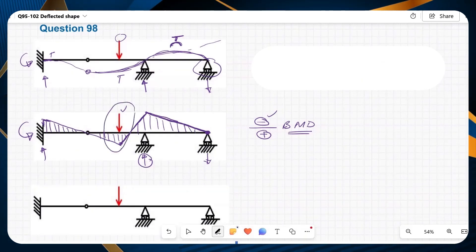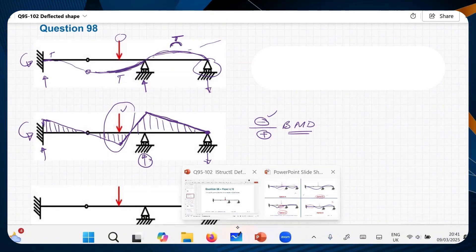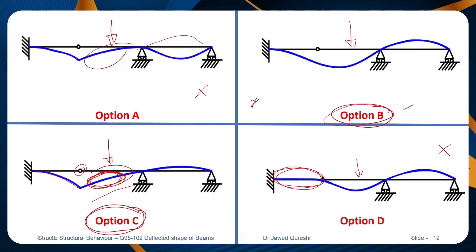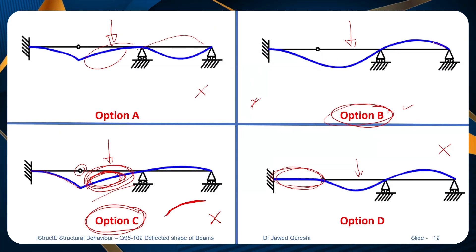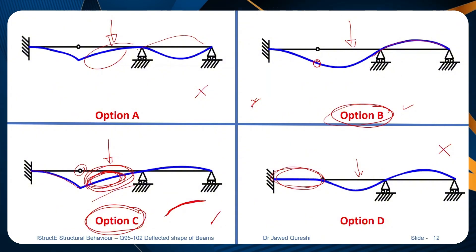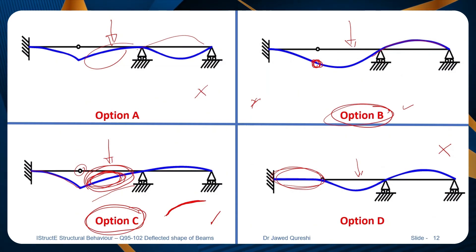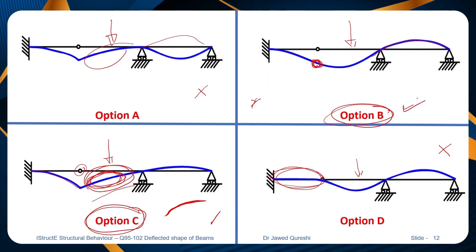The portion where loading is applied must be in sagging. When I look at the options, option C does not look like sagging to me — it looks like hogging, which means option C is wrong. But the way the deflected shape is drawn very smoothly may not be accurate because of the presence of a hinge. The presence of a hinge will cause a little bit of a dip at that point, which is not present in option B. If it had a little dip there, that option would be correct. But certainly option B is the closest one.